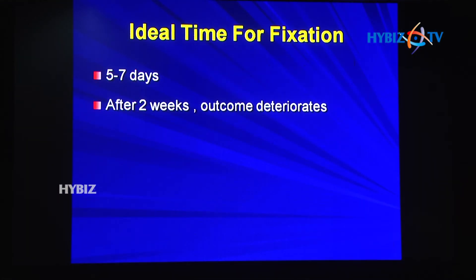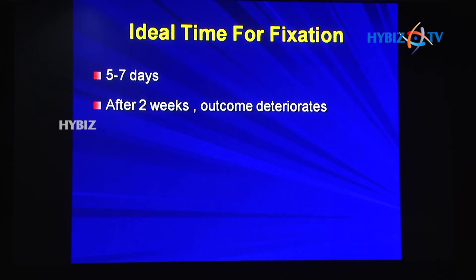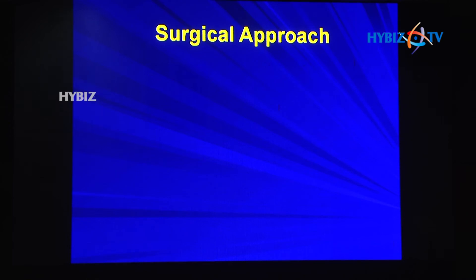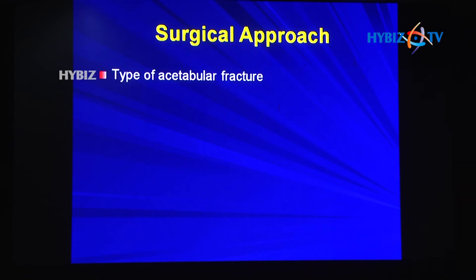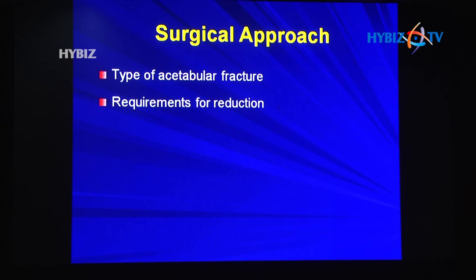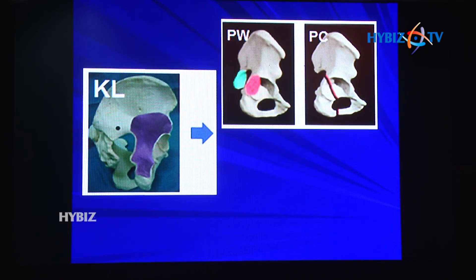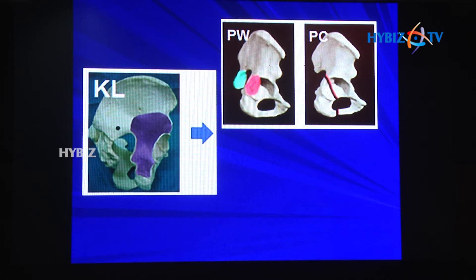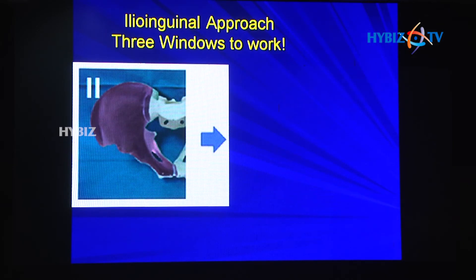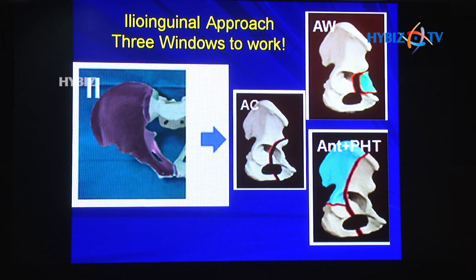The ideal time for fixation is 5 to 7 days; some centers are now operating at 3 days once the patient is stabilized. The three main surgical approaches are Kocher-Langenbeck, ilio-inguinal, and modified Stoppa. For single column or wall fractures, treat from the corresponding approach. Kocher-Langenbeck addresses the posterior side — posterior wall and posterior column fractures. The ilio-inguinal and related anterior approaches manage all anterior column fractures.